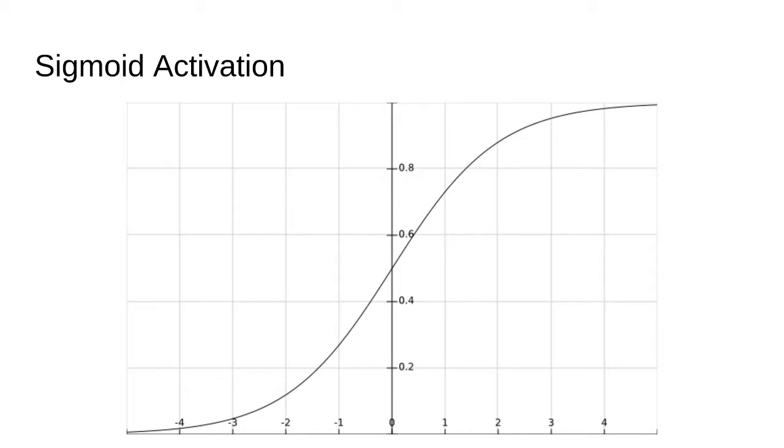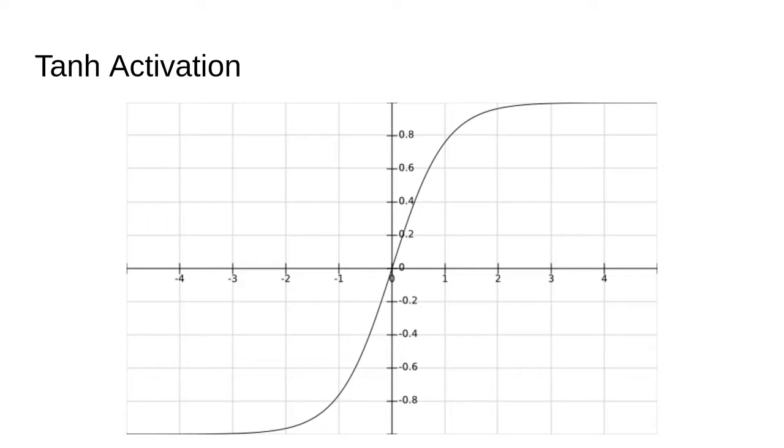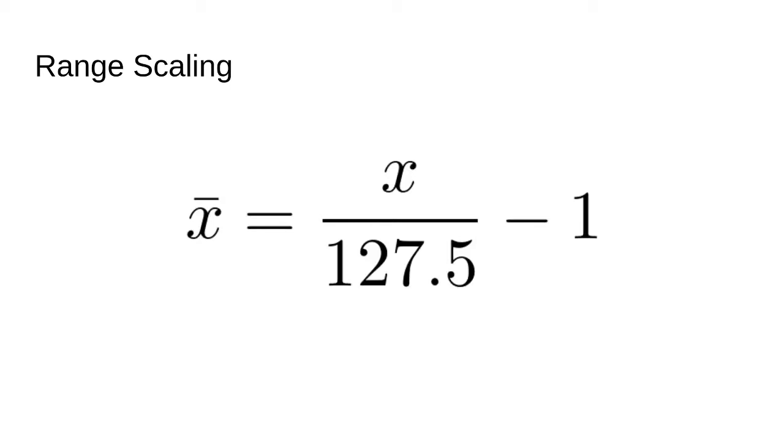In basic GANs, we have used a sigmoid activation. Add the output layer to squash the values between 0 and 1. In deep convolutional GANs, it is recommended to use tanh activation. This will result in values squashed between negative 1 and plus 1. It was found empirically that this produces more appealing results.